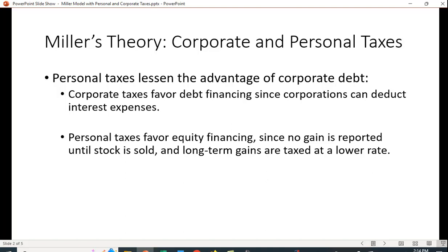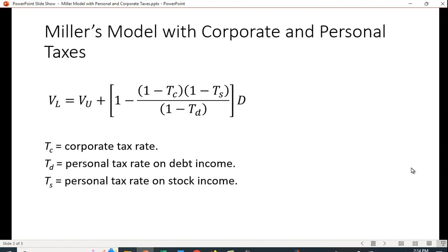Miller derived this formula here. The value of the leveraged firm equals the value of the unleveraged firm, but instead of it being T times D where T is the corporate tax rate, he has this formulation: one minus, one minus the corporate tax rate, times one minus the tax on stock income, divided by one minus the personal tax rate on debt, times the rate on debt.